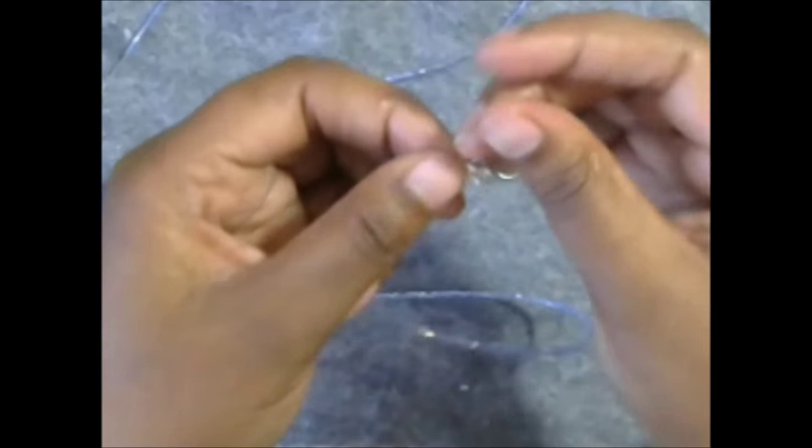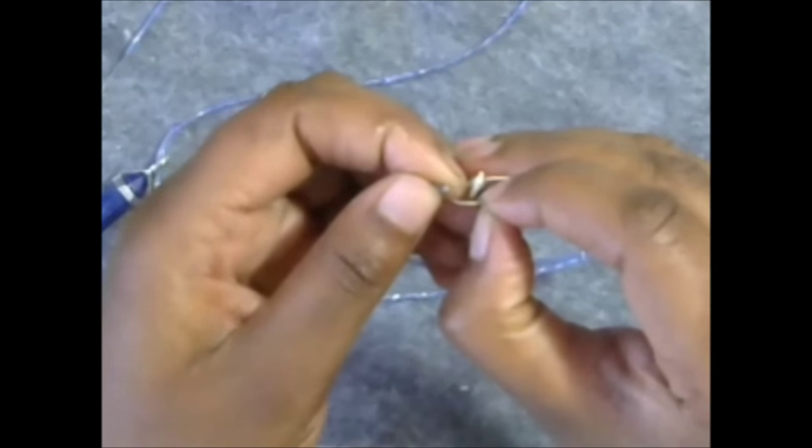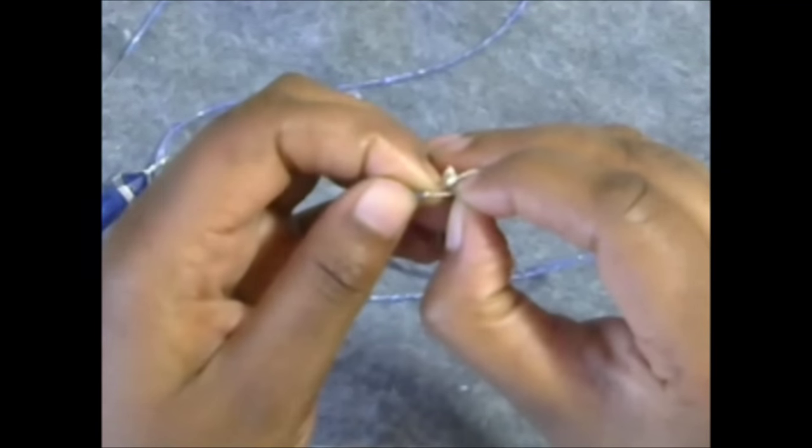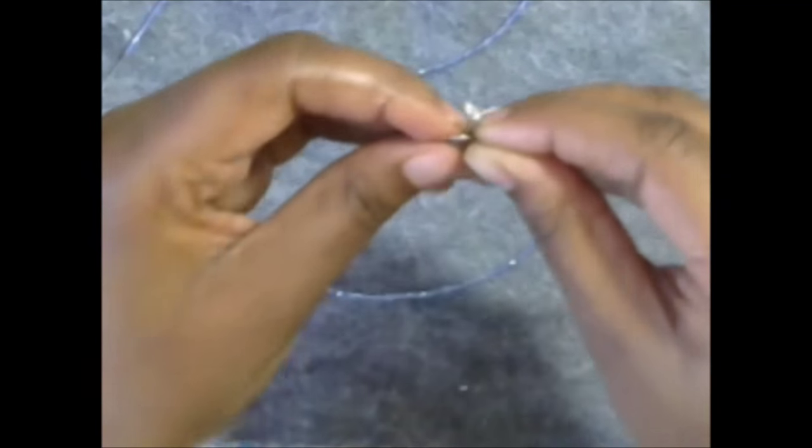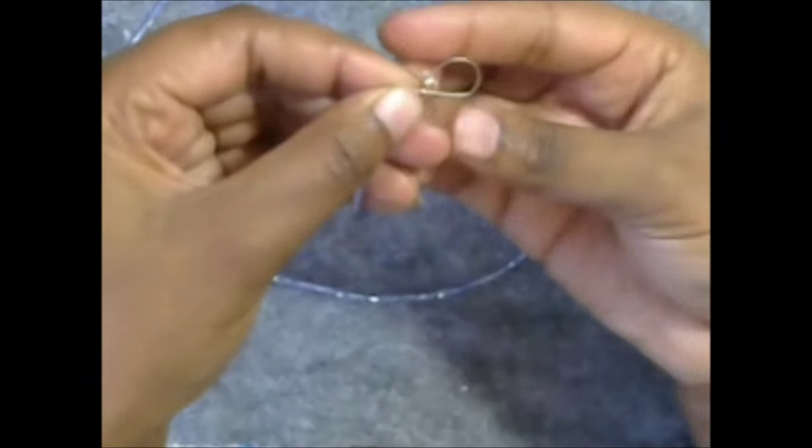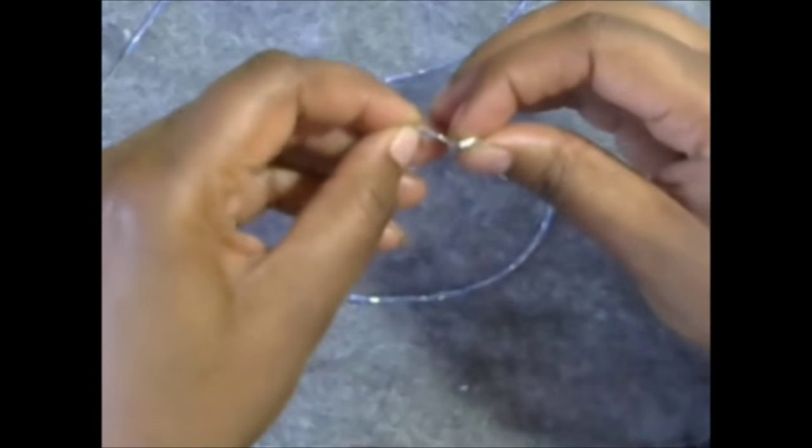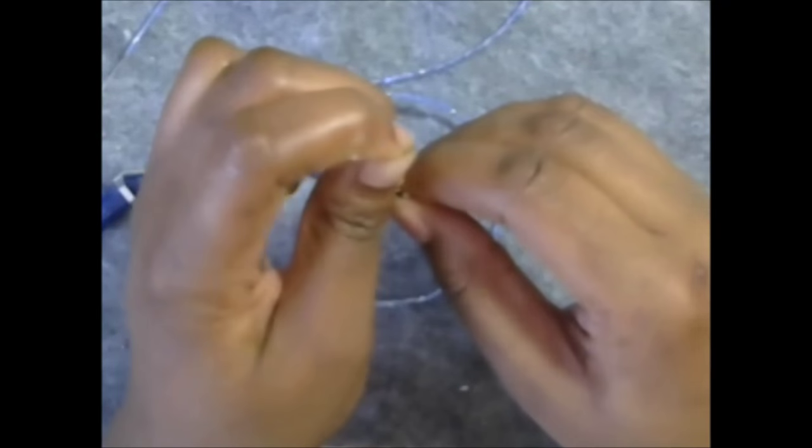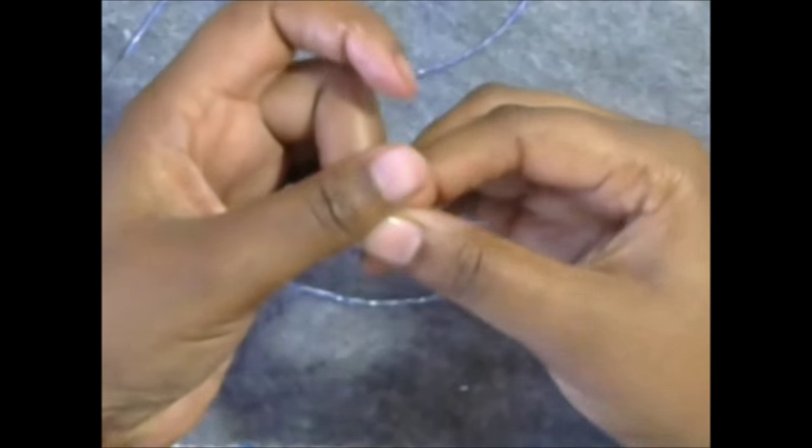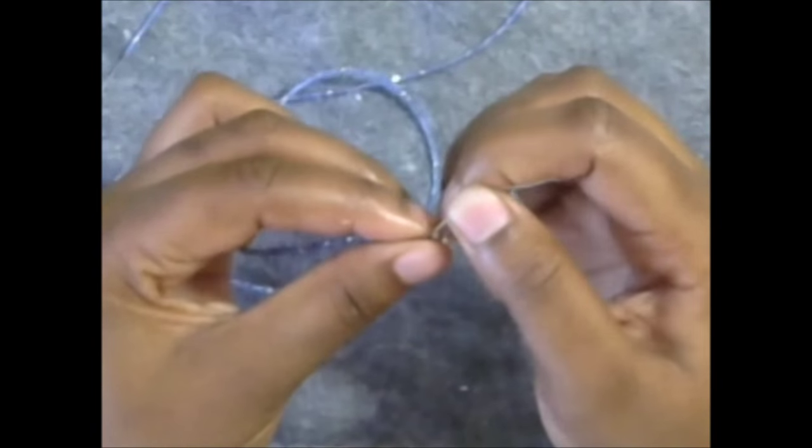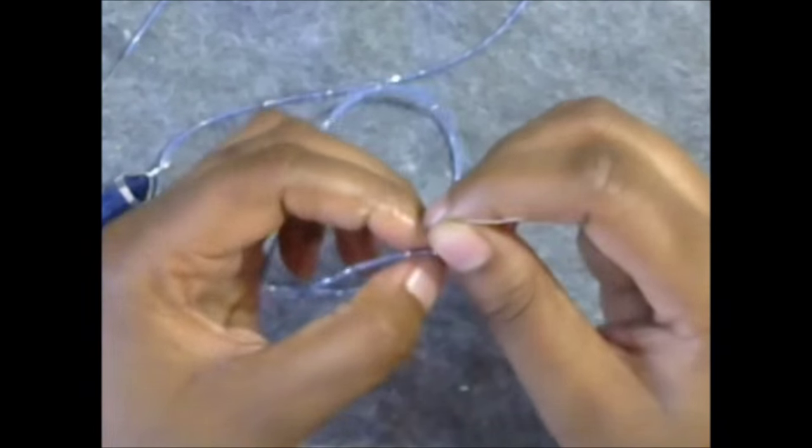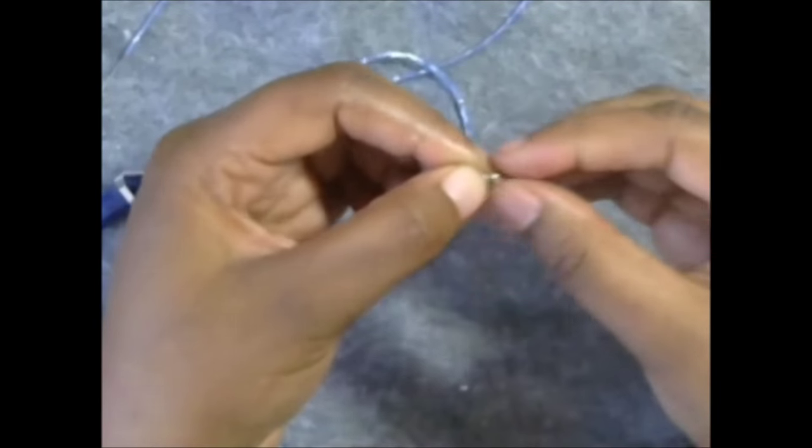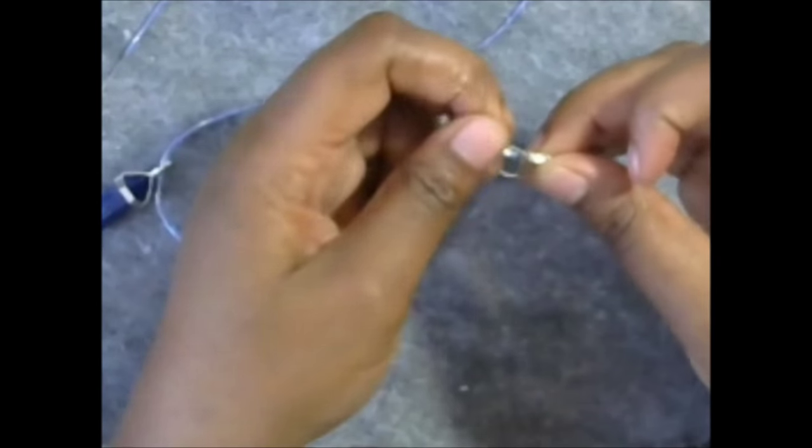And then I'm going to take the end of my wire and I'm going to put it through that crimp bead. Did you see that? So I put it right through there and I made a loop. And then I'm going to pull it through as much as I possibly can. Just like that. Just to make sure that it's nice and tight.